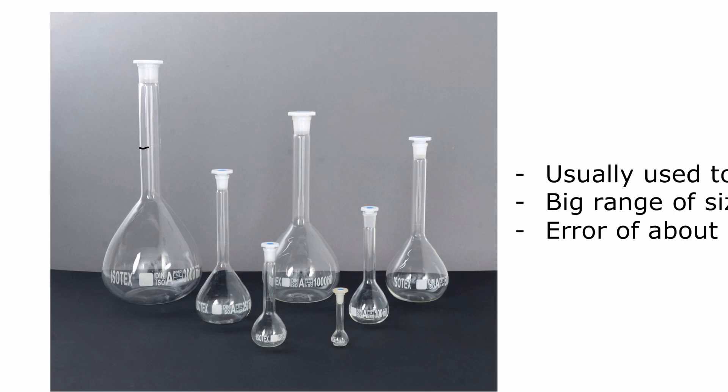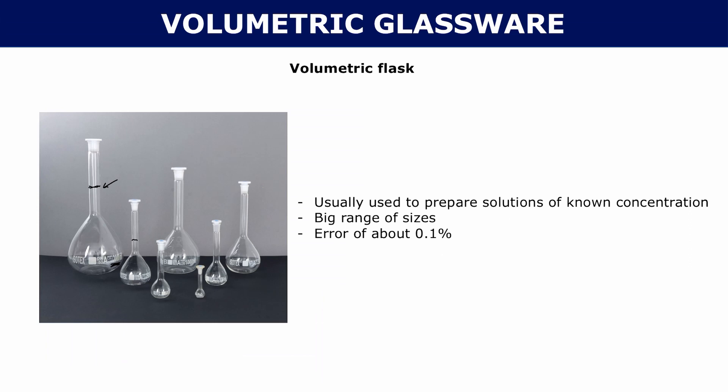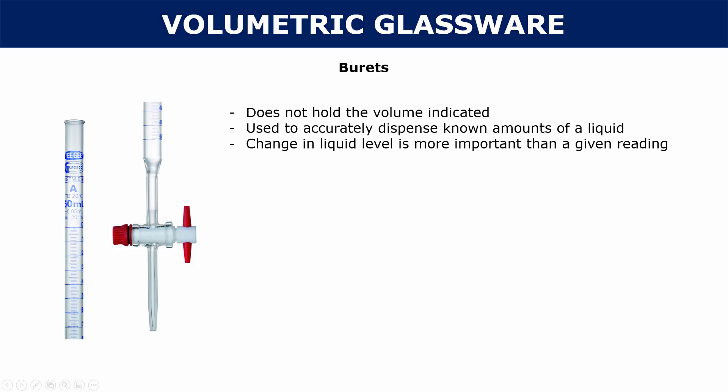The volumetric flask all the way to the left here is a 2,000 mil volumetric flask. Once you've filled up to this line here, then that means you have 2,000 mils. Unlike a graduated cylinder, you don't have the type of markings all around the volumetric flask to tell you that you have maybe 1,000 mils or 500 mils. You only have one marking that tells you that you have 2,000 mils. Volumetric flasks, just like graduated cylinders, are really accurate. They have an error of about 0.1%.